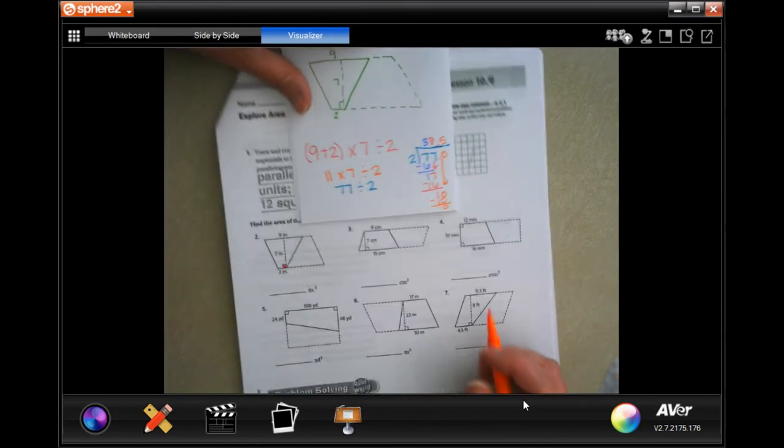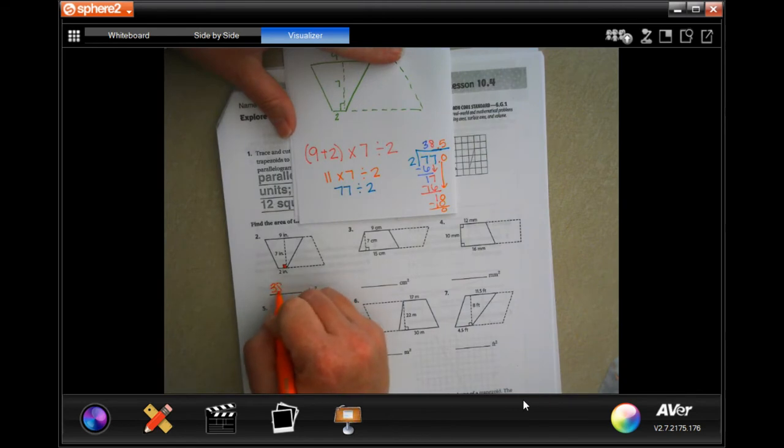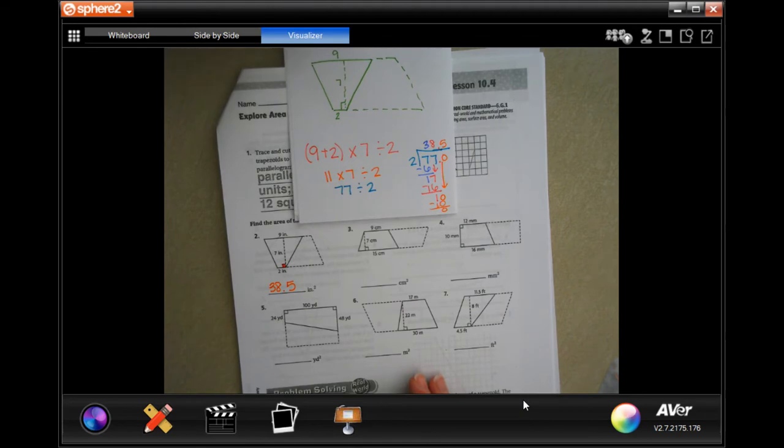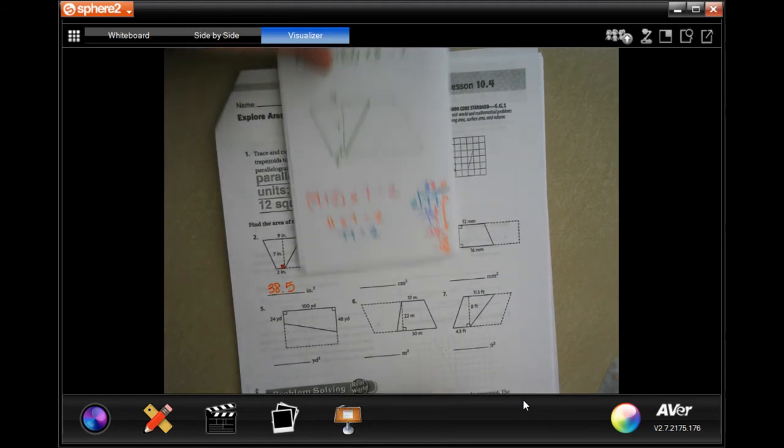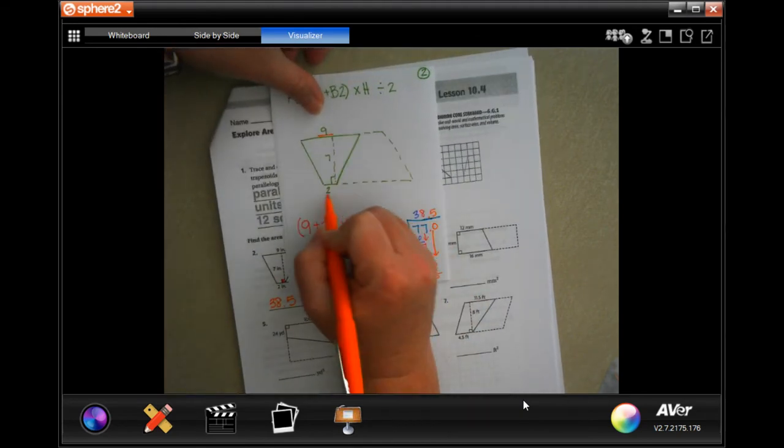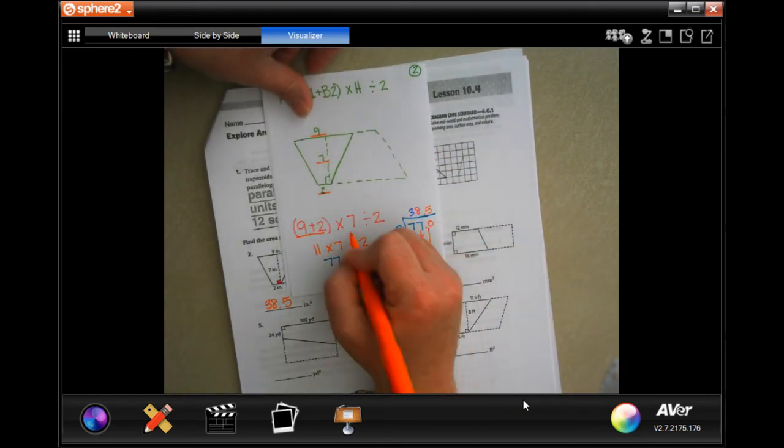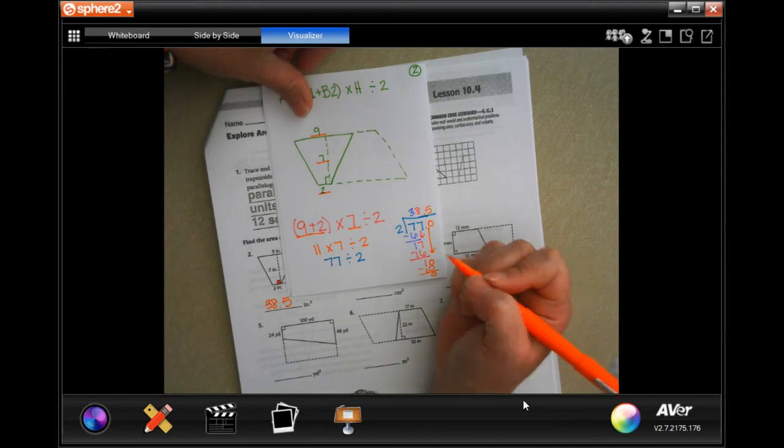So, 38.5. We're going to do this again, don't worry. We're going to do base 1, base 2, add them together. We're going to multiply that by the height, and then we're going to divide it by 2.